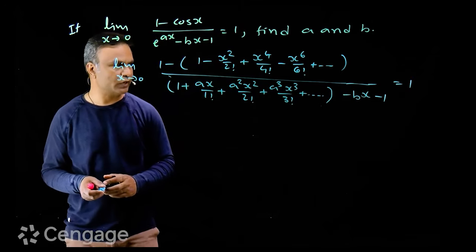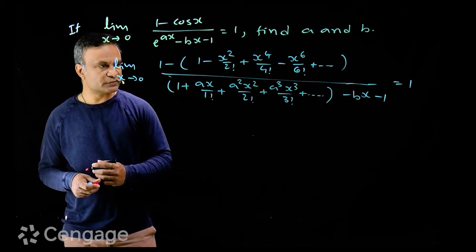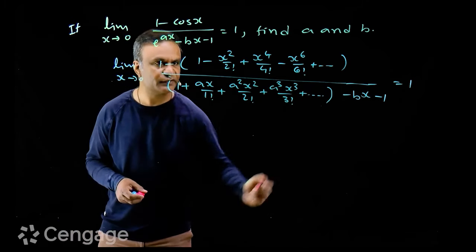This limiting value is equal to 1. In the numerator, 1 gets cancelled out. Also in the denominator, 1 gets cancelled out.